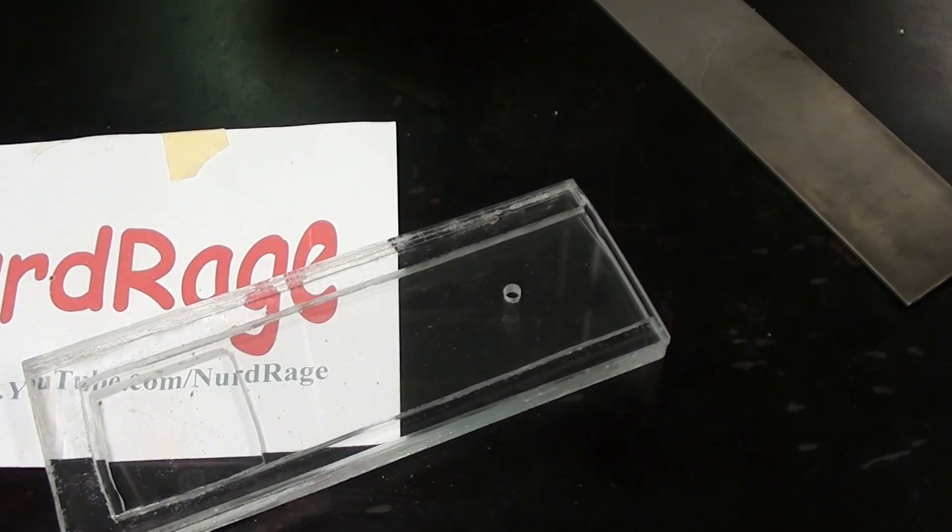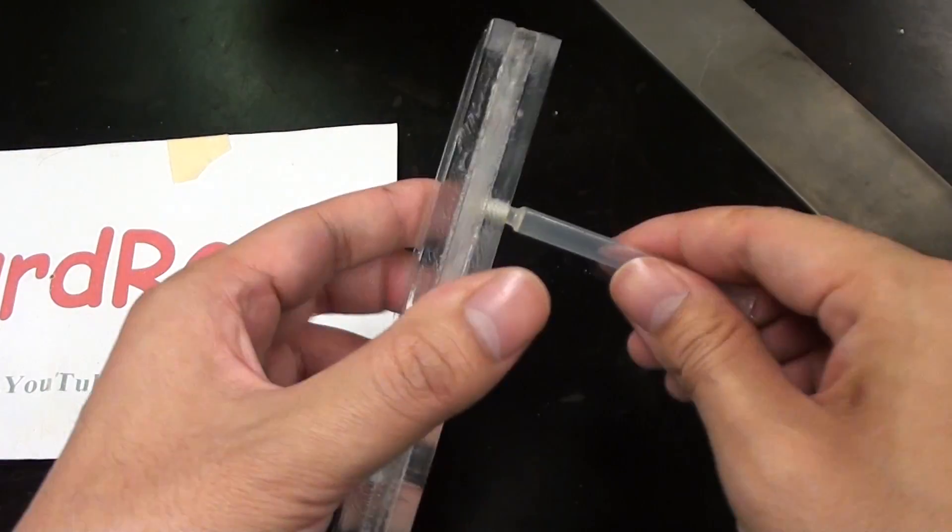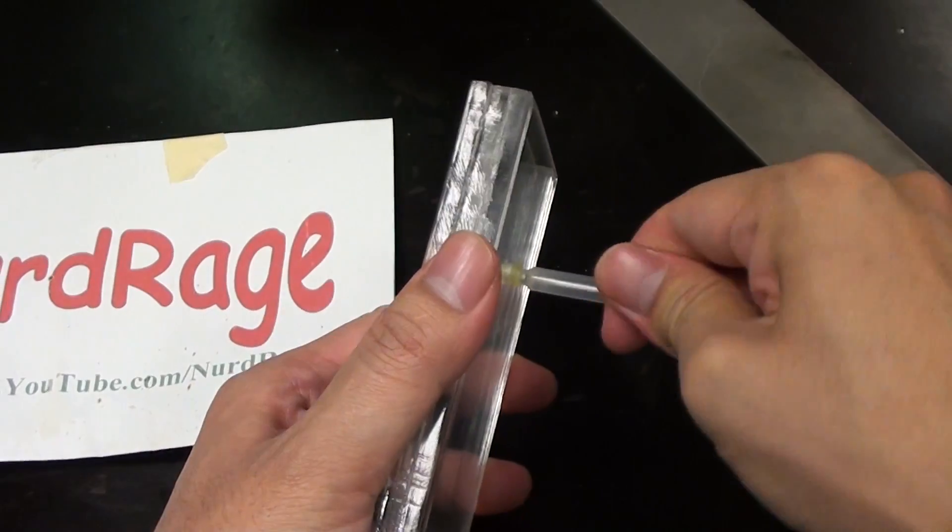Okay, back to the compartment. I've drilled a hole in the back so we can insert a tube. This will allow us to siphon off products as they form during electrolysis.